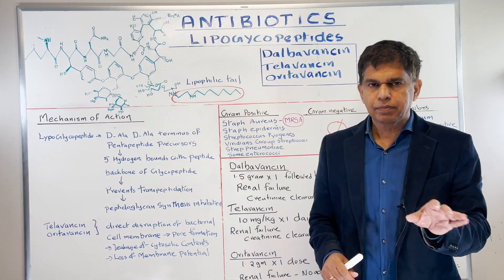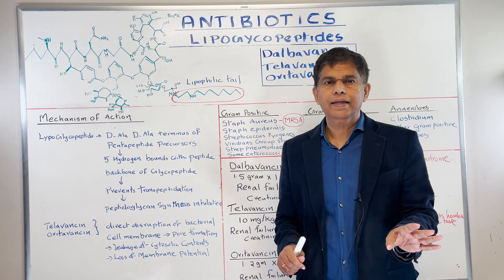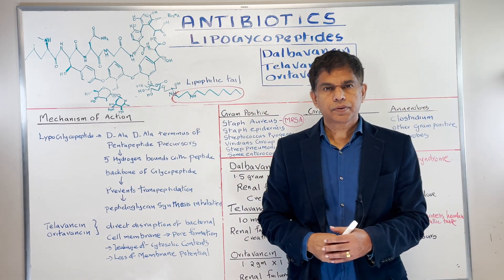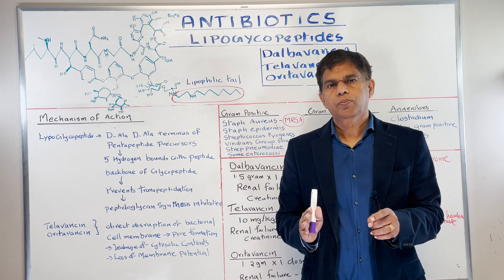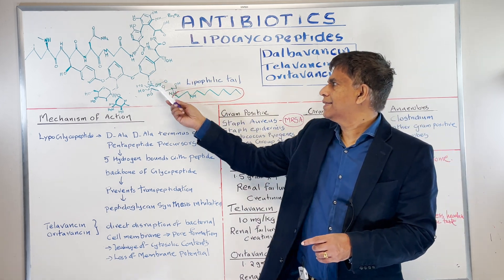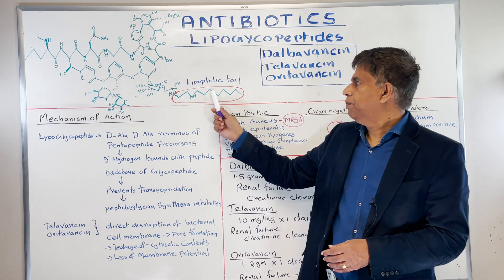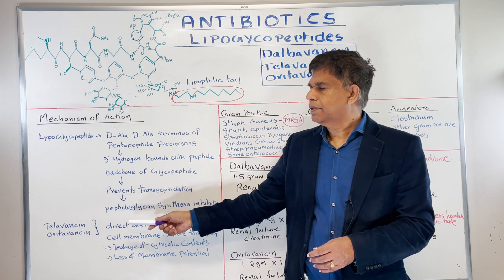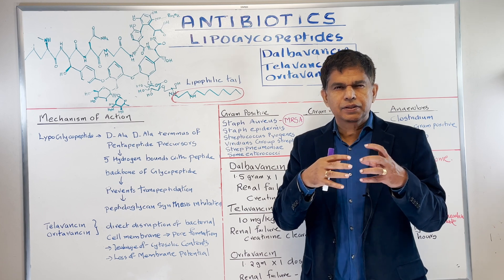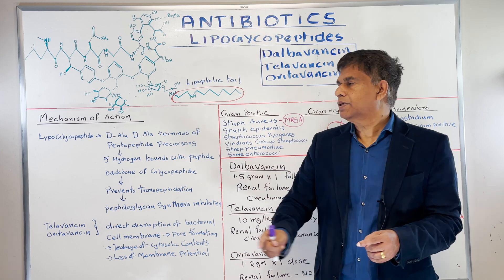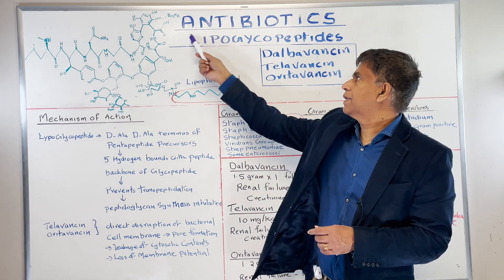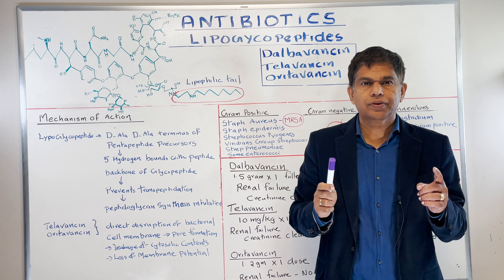Last video we talked about glycopeptides, mainly vancomycin. Today's topic is lipoglycopeptide. When we talk about lipoglycopeptide, it's similar to vancomycin, but the biggest difference is they have a lipophilic tail attached to it. This lipophilic tail gets the drug attached to the bacterial cell membrane and can cause infiltration, cytosolic leak, and all that. Always try to remember there's a significant difference between glycopeptide and lipoglycopeptide — the lipophilic tail.